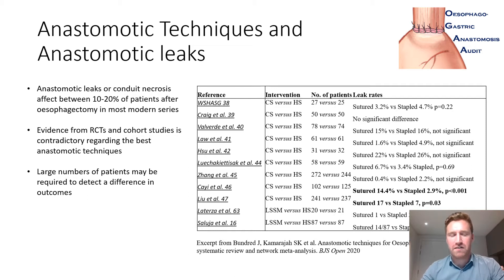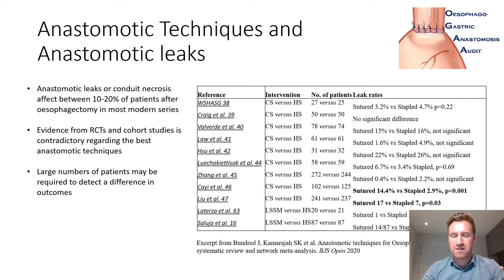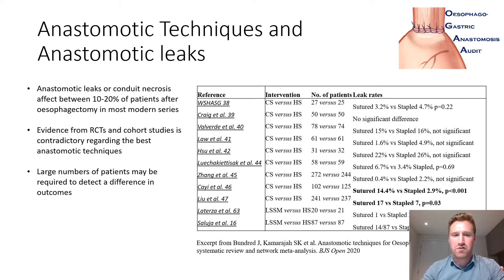So why are we interested in anastomotic leaks and conduit necrosis? Well, they affect between 10 and 20 percent of patients after esophagectomies in most modern series, and evidence from randomized control trials and cohort studies is contradictory regarding which anastomotic techniques are best to avoid leaks and necrosis. As shown in an excerpt from a systematic review, the RCTs comparing different techniques contain small numbers of patients and quite variable results. We also felt that larger numbers of patients might be required to detect a difference in these outcomes.